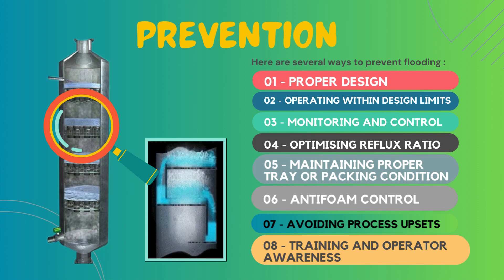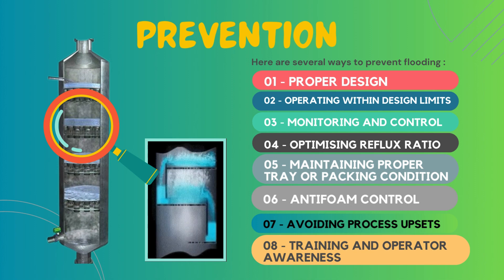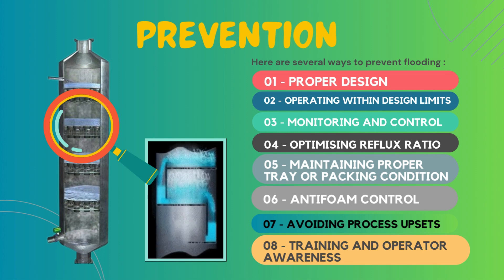The sixth measure is anti-foam control. It is very necessary to implement effective anti-foam control measures to prevent foaming within the column, which can contribute to flooding. Anti-foam agents should be used as needed to suppress foam formation and maintain proper liquid-vapor distribution, which helps prevent flooding in the distillation column.